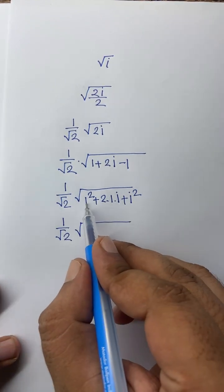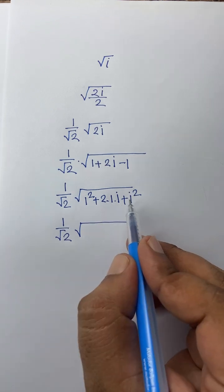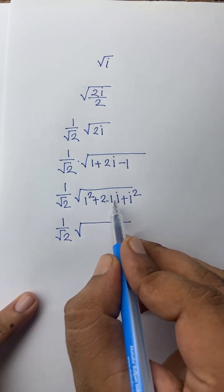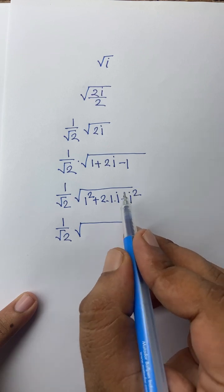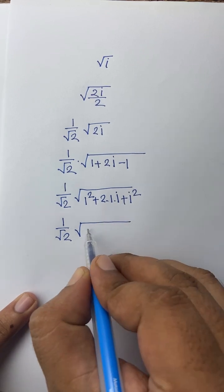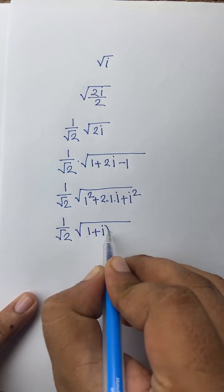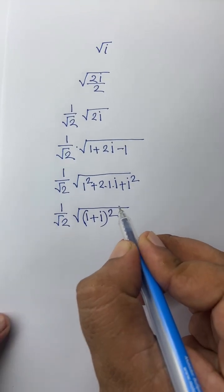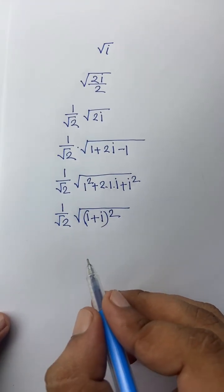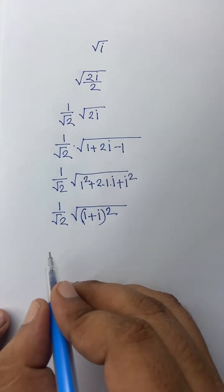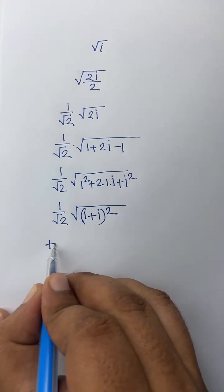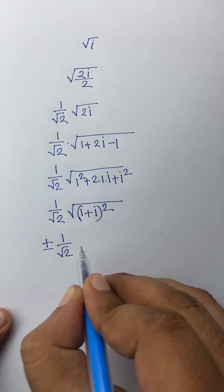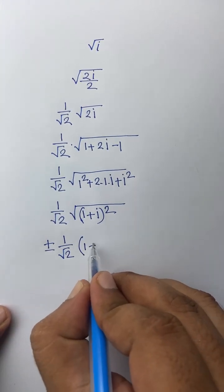Then I can say here, if we think of it as a and B, we know that a squared plus 2ab plus b squared equals (a plus b) whole square. So the square root cancels and we find our final answer: plus or minus 1 over square root 2 times (1 plus i).